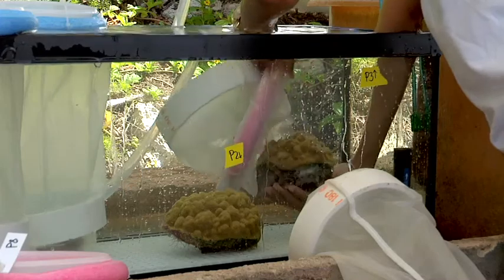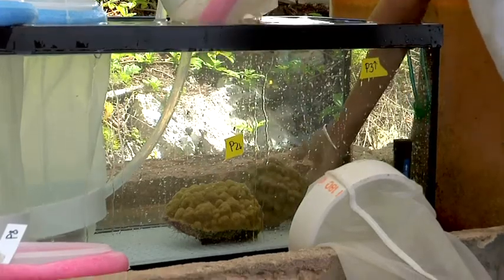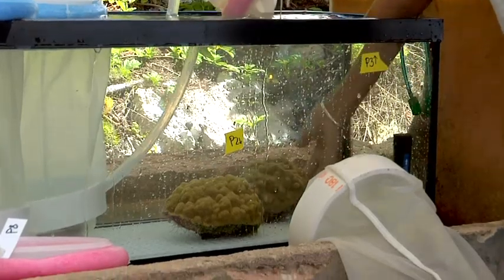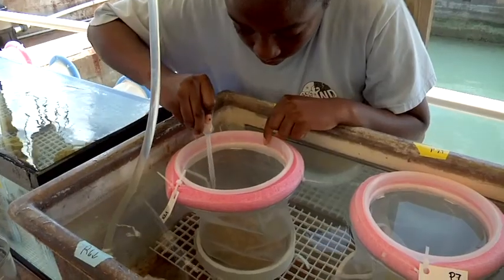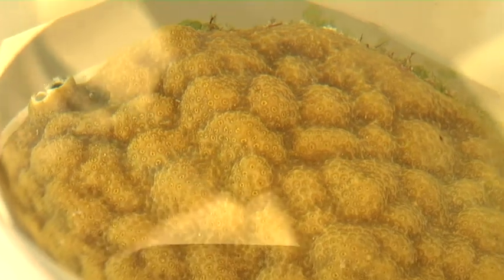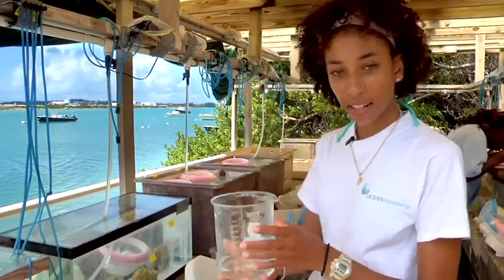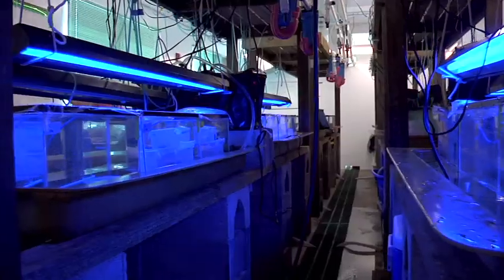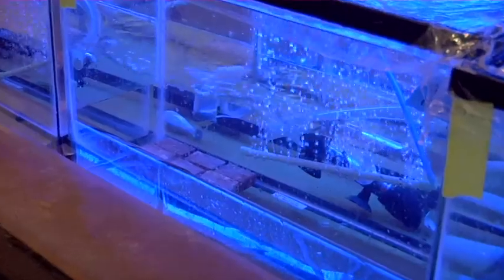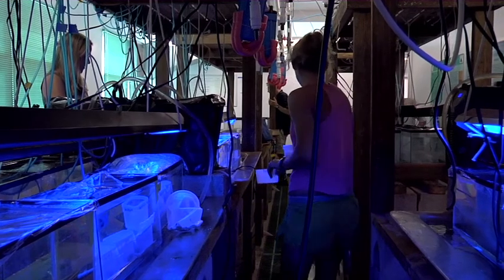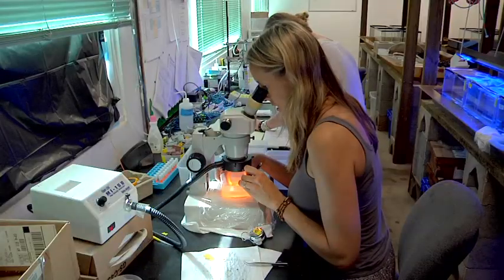Parites astroides, or the mustard hill coral. What we're doing here is running an experiment this summer, working on inter-site variation among the patch reef corals and the rim reef corals. We collect the larvae, put them into beakers like this, and take them into the lab and settle them onto terracotta tiles where they stay for 48 hours. After the 48-hour period, we check for settlement.